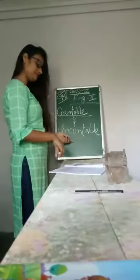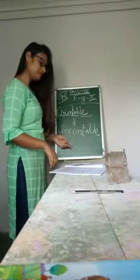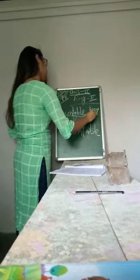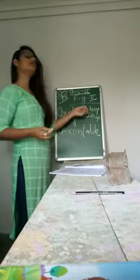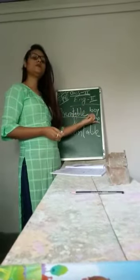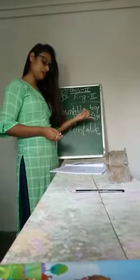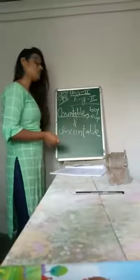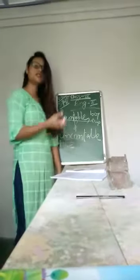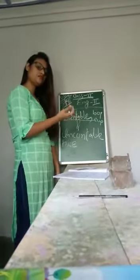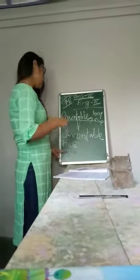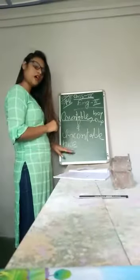For example, boy and cup — we can count them one by one, so they are countable nouns. Uncountable: rice. We cannot count rice one by one. We count it in kilograms, but we don't say one rice, two rice. We count it as a whole. That's why rice is an uncountable noun.